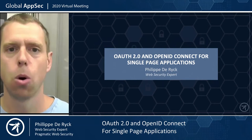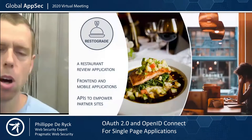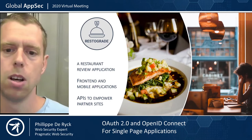Welcome to this session about OAuth and OpenID Connect in single page applications. I'm going to cover recent changes in how single page applications handle OAuth and OpenID Connect. As a running example throughout the presentation, I'm going to talk about a restaurant review application known as RestoGrade. I'm a chef myself and I like food, so this was a logical choice for one of my training applications.